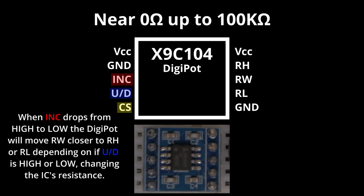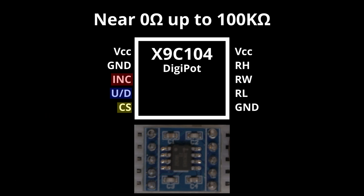When the increment pin is dropped from digital high to digital low, the integrated circuit will lower or raise its resistance by moving the internal wiper closer to resistor high or resistor low depending on whether up-down is high or low. Again, if you want more detail on how digital potentiometers work, there are good resources out there on that. I'm just going to leave it at that though.